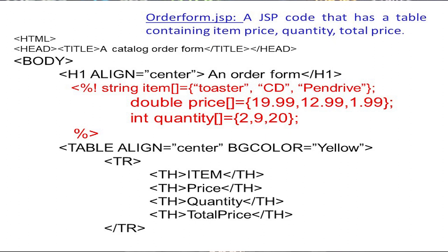We have stored three values in these arrays. The first item is 'Toaster', the second is 'CD', and the third is 'Pen Drive'. The item names are stored in the item array. Their prices are stored in the price array — Toaster: 19.99, CD: 12.99, Pen Drive: 1.99 — as double values. The quantities stored in the quantity array are 2, 9, and 20 respectively.